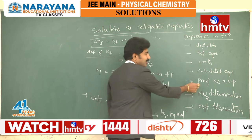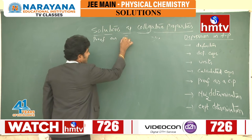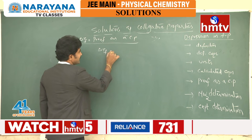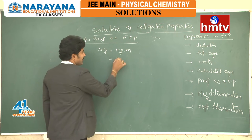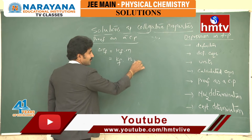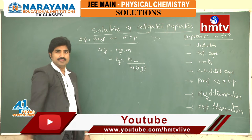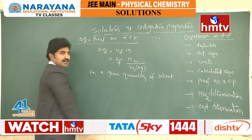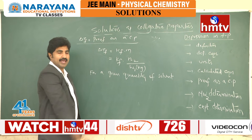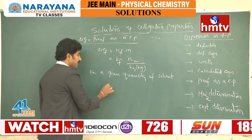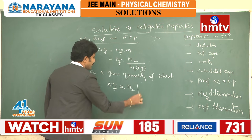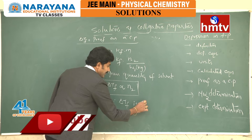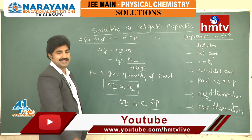Proof of ΔTf as a colligative property: ΔTf = Kf × molality = Kf × (moles of solute / weight of solvent in kg). For a given quantity of solvent, W1 is constant, and Kf is also a characteristic property of the solvent — so it is also constant. Therefore ΔTf is directly proportional to the number of moles of solute, which proves that ΔTf is a colligative property.